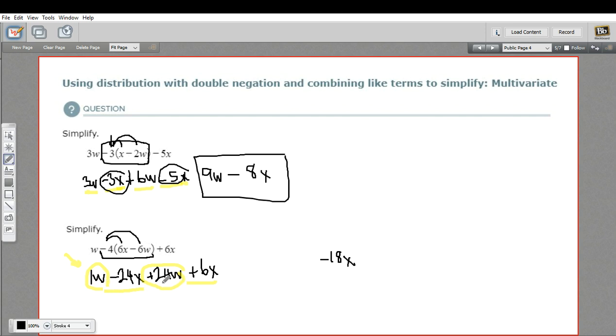So 1w plus 24w is going to be 25w. The answer here is 25w minus 18x. And that is a little bit of work with distribution to simplify algebraic expressions.